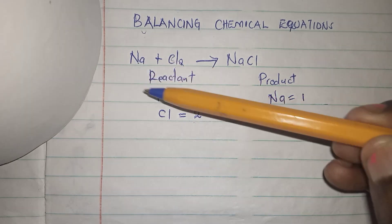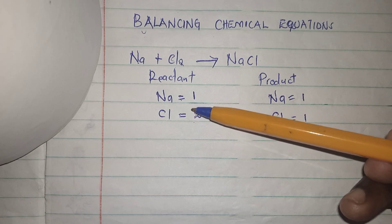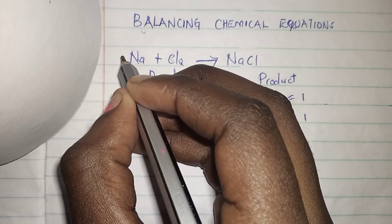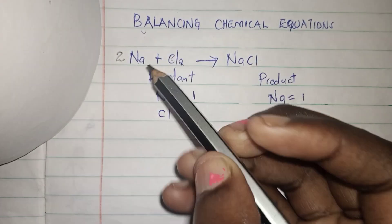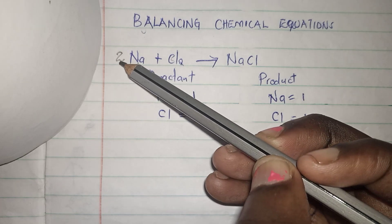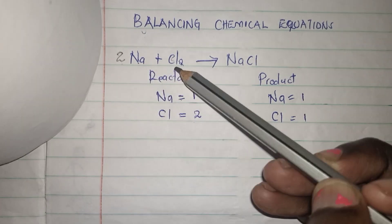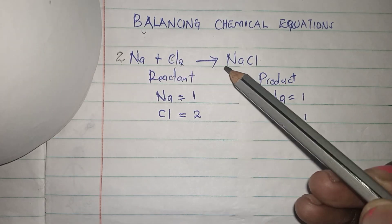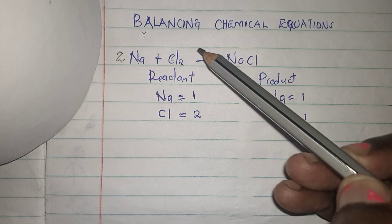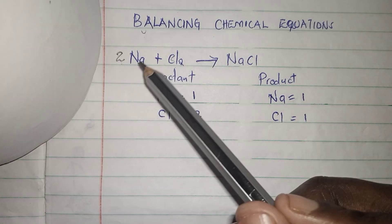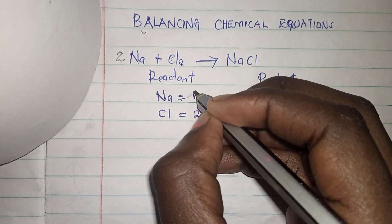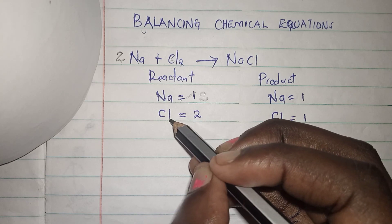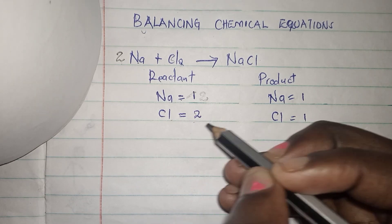I have to balance the sodium so that there are two on both sides. What I do is place a coefficient of two here. When we are balancing, we only change the coefficient — the subscripts cannot be changed. The values written below are subscripts and will never be changed, but the coefficients are changed. So when I write two here, sodium will be two on the reactant side and chlorine will be two on the reactant side as well.